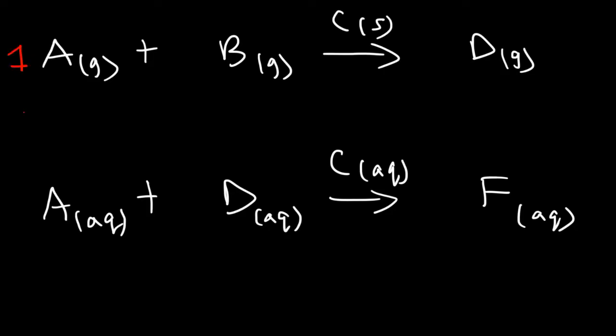So in the first reaction, catalyst C, is it a homogeneous catalyst or a heterogeneous catalyst? Think about the word homo and hetero. Homo means the same, hetero means different. So notice that the catalyst is in a different phase than the reactants and the products. So for reaction 1, C represents a heterogeneous catalyst.